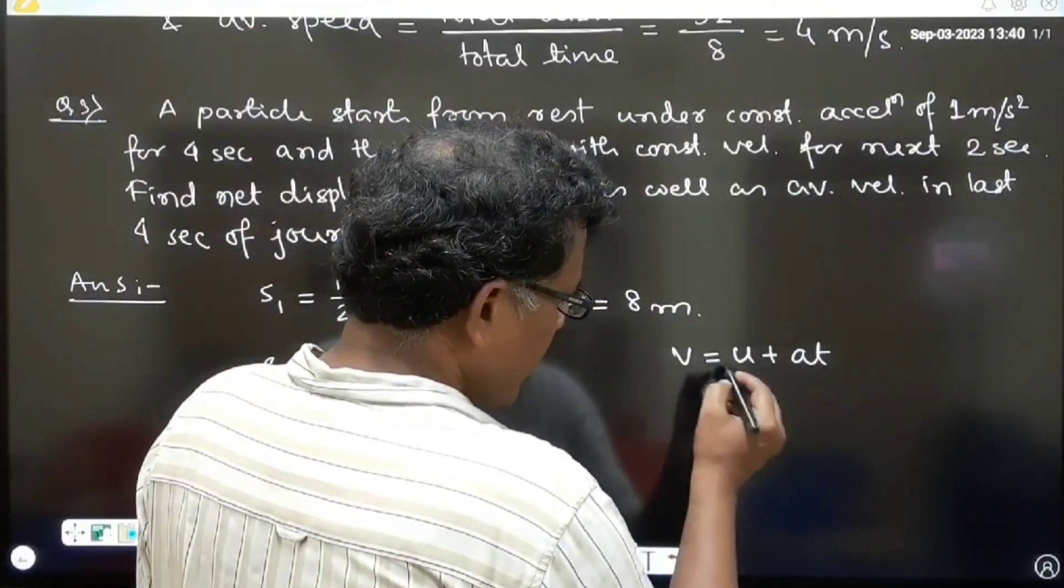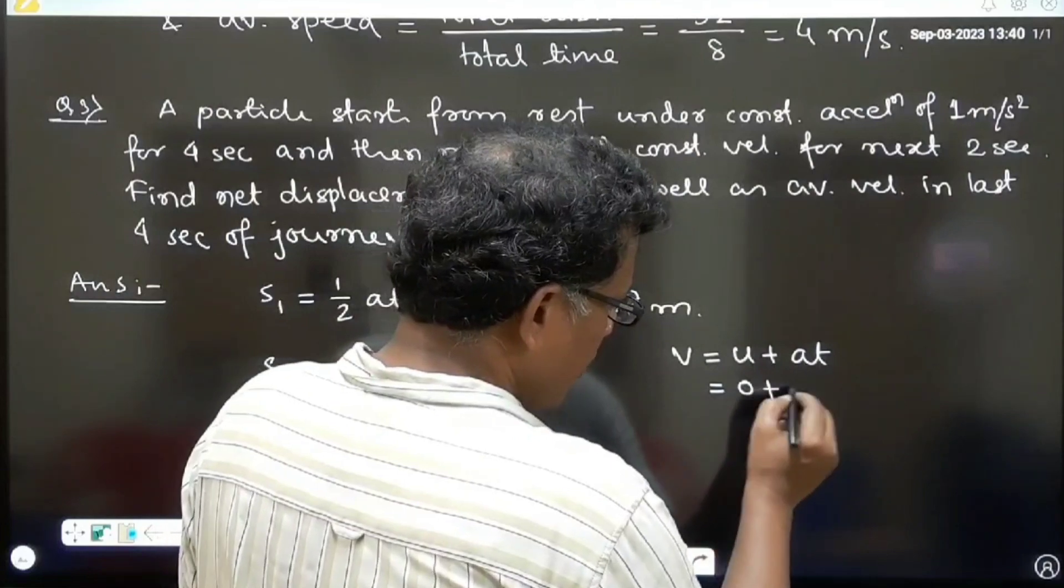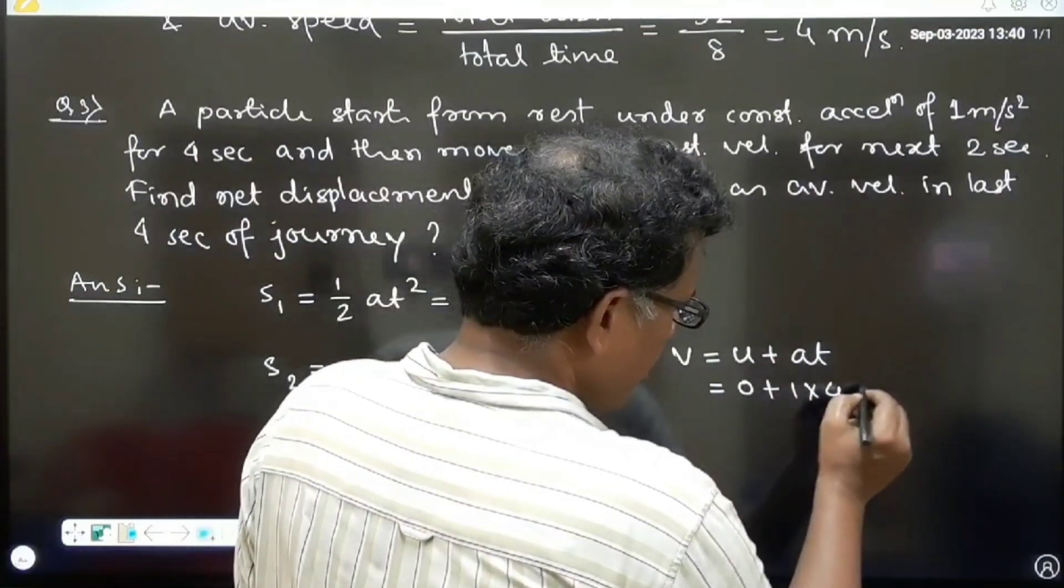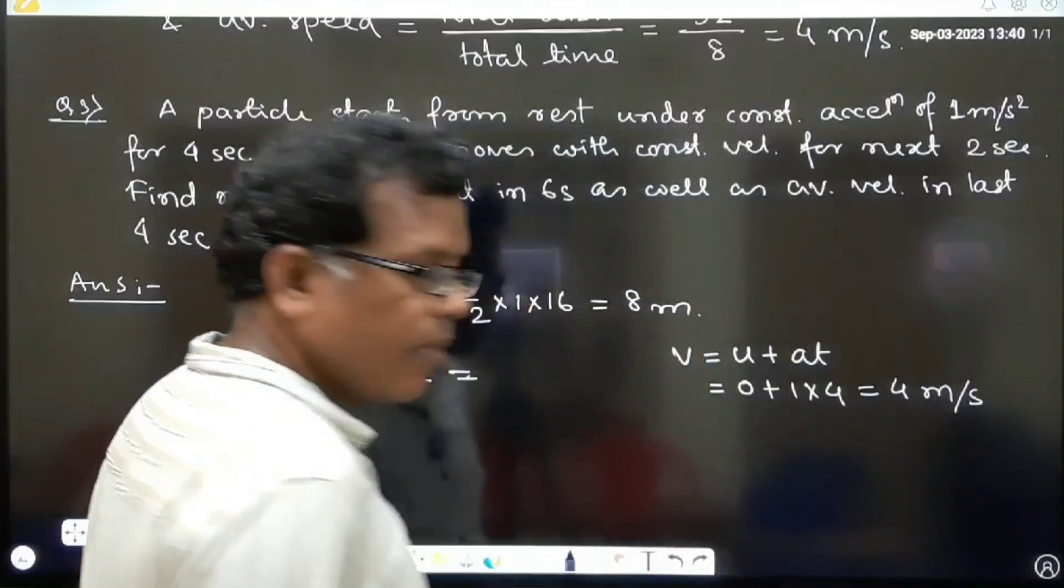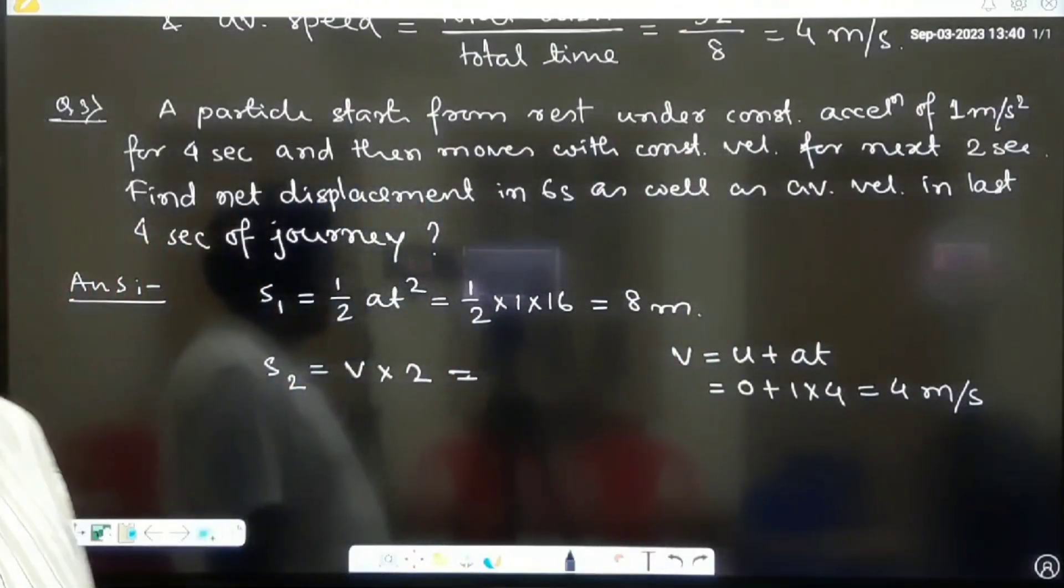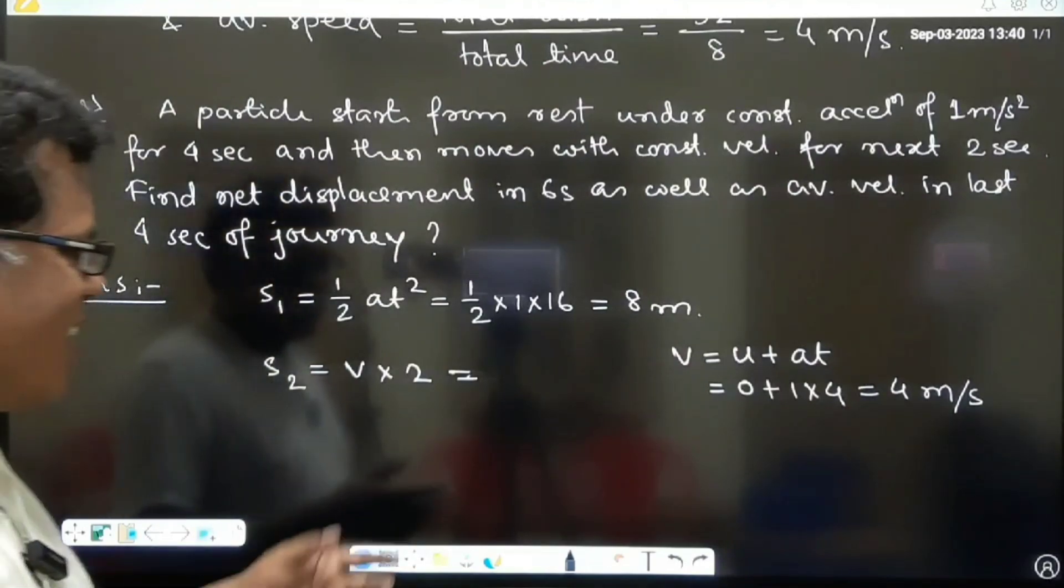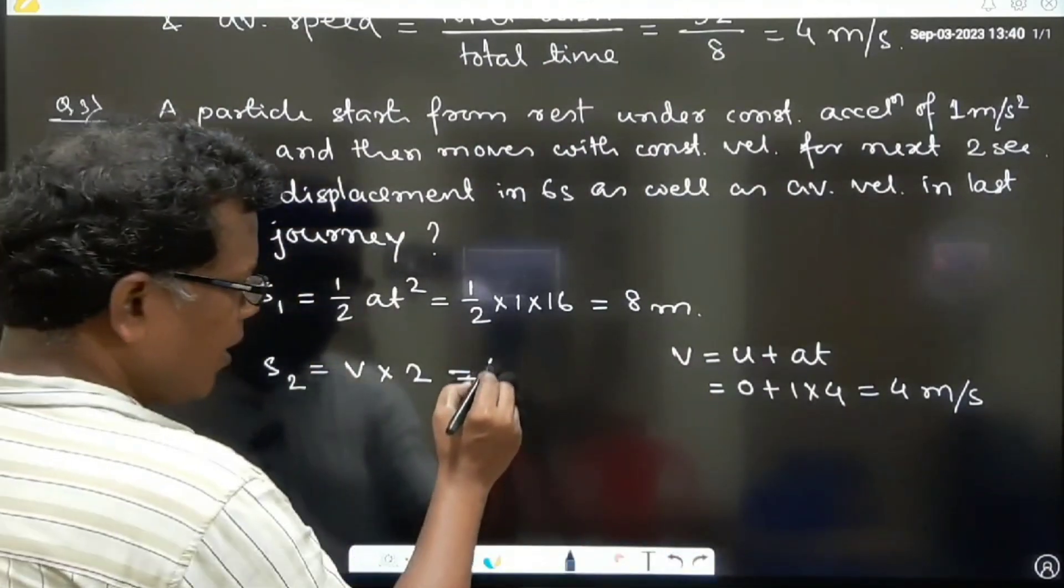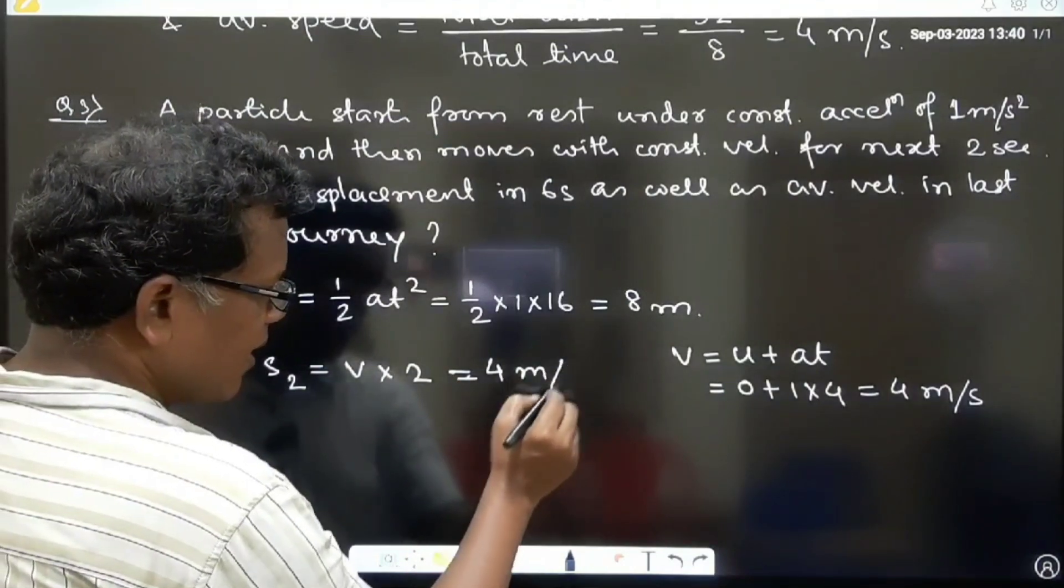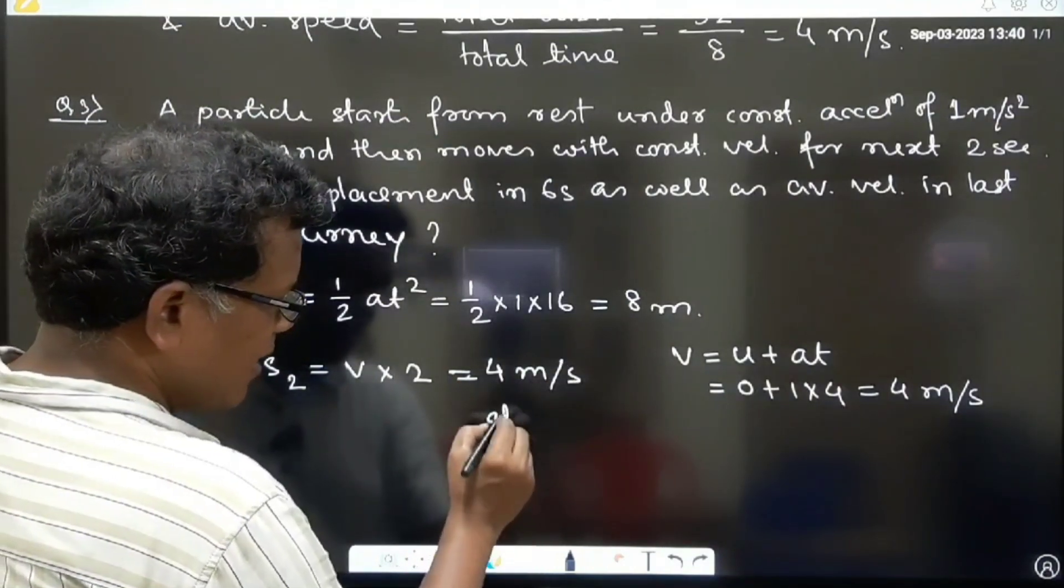So what I can do? I can write down 0 plus 1 into 4. So it will be 4 meter per second. The velocity at t equal to 4 second.